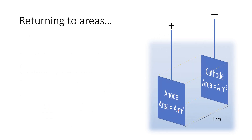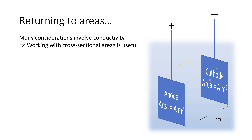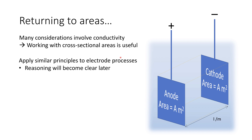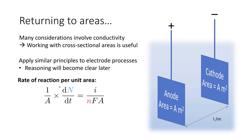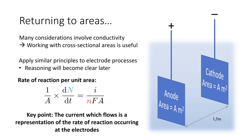To understand a bit more, we need to go back to area considerations. Remember we looked at the areas of electrodes, because this is quite an important aspect. Many considerations involve conductivity, and conductivity fundamentally is an area function, so working with cross-sectional areas becomes very useful. We apply similar principles to electrode processes, and we look at the rate of reaction per unit area. If we take our rate of reaction and divide by the area of the electrode, we get an expression which relates our current to the area of those electrodes. The current that flows is a representation of that rate of reaction — if the reaction happens faster, we get a faster rate of electron transfer, leading to a higher current.